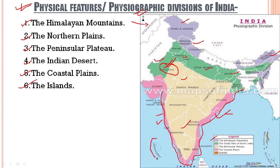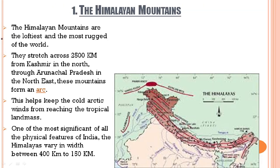Then we have the islands, named as Lakshadweep and the Andaman and Nicobar Islands. Now we will begin learning the first physiographic division of India: the Himalayan mountains.